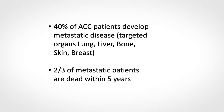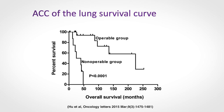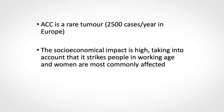About half of ACC cases are metastatic, and unfortunately metastatic ACC leads to death usually within five years. Survival curves from ACC of the lungs show that operable groups do much better compared to non-operable groups, reflecting the fact that the non-operable group are metastatic.